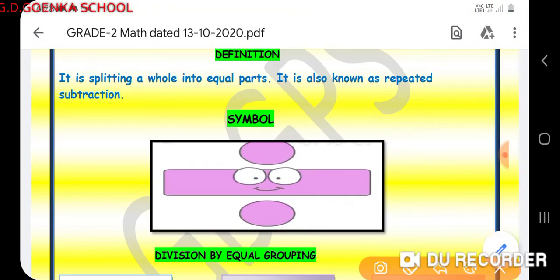My dear little Goenkans, the symbol for division is here. It is shown here: a simple line like this and two dots, one up and one down. This is the symbol for division.